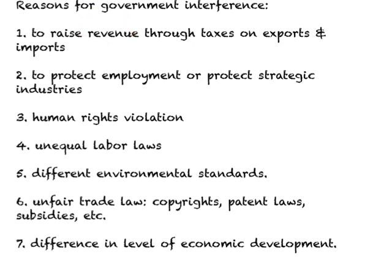Another reason for government interference is that if domestic industry is hurt by foreign competition, the government may intervene to protect employment. Or the government may interfere to protect strategic industries, for example, nuclear, defense, or the space industry.